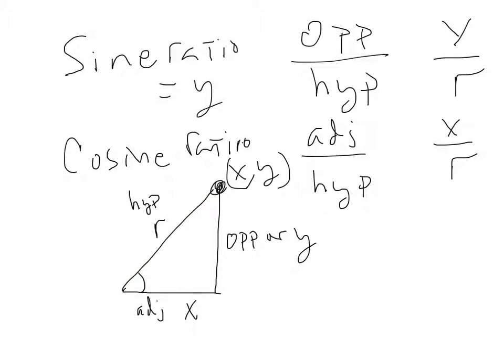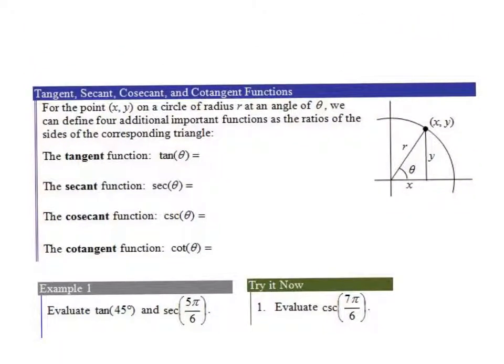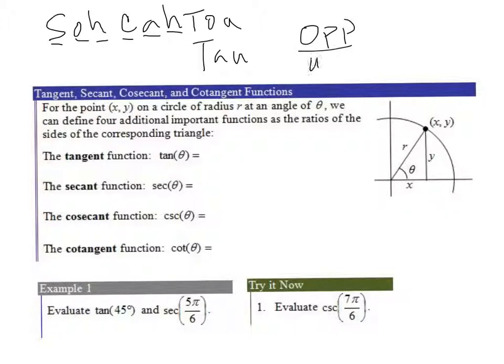Okay, so now we're going to extend this to four other trig ratios. This is out of section 5.4. We know that the tangent function, if you think about work that you've already done back in 9th grade, you learned about SOHCAHTOA, where the sine is the opposite over the hypotenuse, the cosine is the adjacent over the hypotenuse, and the tangent ratio is the same thing as the opposite side over the adjacent side.